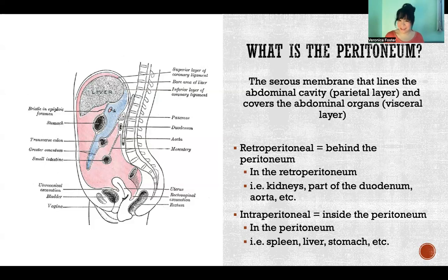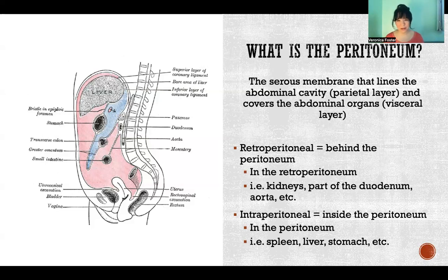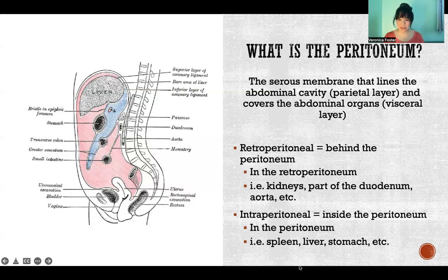Anything inside the peritoneum is intraperitoneal, and anything behind it is retroperitoneal. There is quite a list of organs contained in both spaces, but hopefully now you have a better understanding of what those terms actually mean. Thank you so much for watching this video and hope you have a great day.